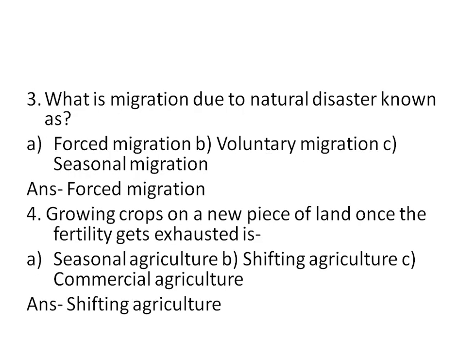Number 3 is: what is migration due to natural disaster known as? Options are forced migration, voluntary migration, and seasonal migration. The correct option is forced migration.